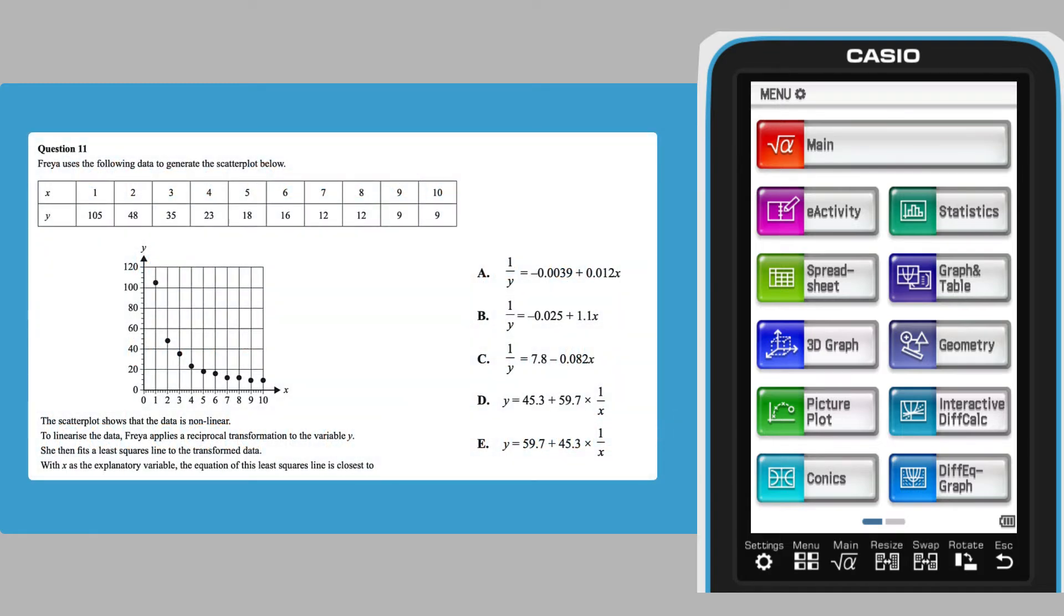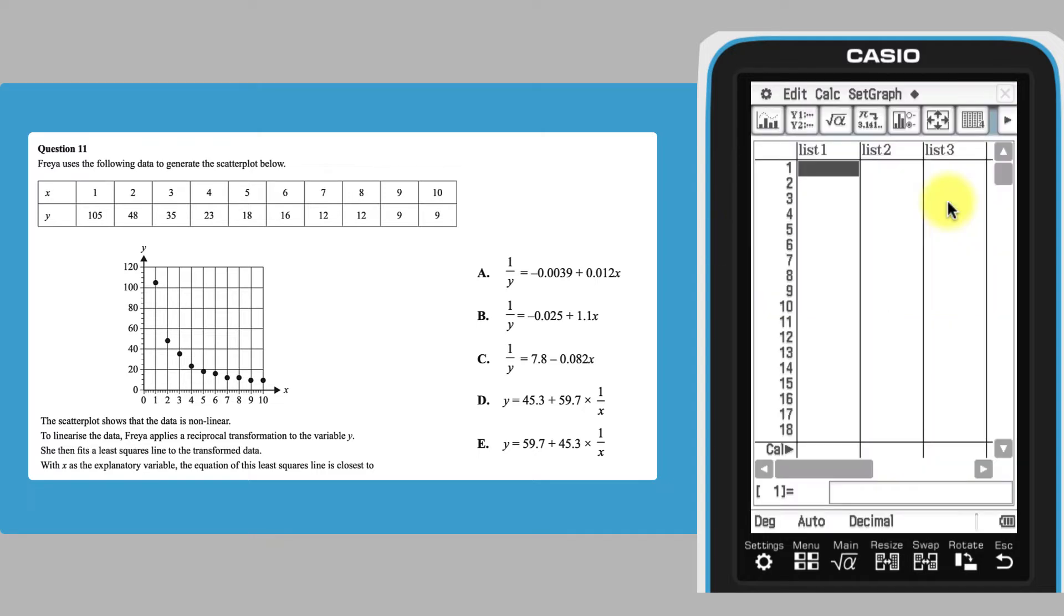The first step when fitting least squares regression lines to bivariate data is to enter the data into the ClassPad's Statistics app. Unless these lists are already in use, enter the X values into list 1. This can be done using the numeric hard keyboard, pressing execute between successive entries.